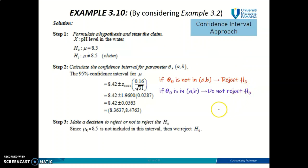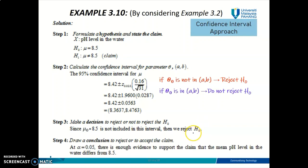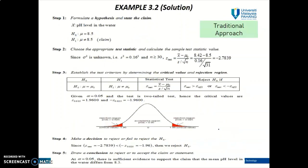We need to reject H-null because mu-naught is not included in the interval. That is how to make a decision using the confidence interval approach. Finally, make your conclusion — it is exactly the same as for the traditional approach. Our conclusion is that we have enough evidence to support the claim that the mean pH level in the water differs from 8.5. Comparing with our previous answer using the traditional approach, both approaches give the same decision to reject H-null, and the same conclusion — it doesn't matter which approach you use.